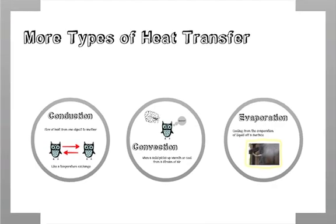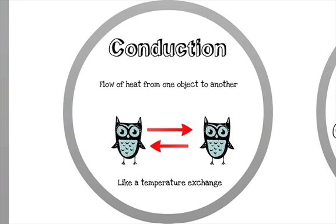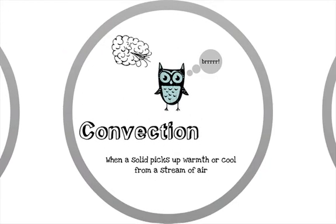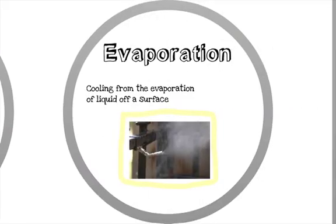Other types of heat transfer include conduction, which is the flow of heat from one solid material to another; convection, which is when a solid object will pick up warmth or coolness from a stream of air; and evaporation, when there's a cooling effect because water is evaporating off of the surface of an object.